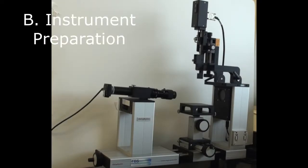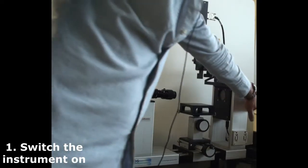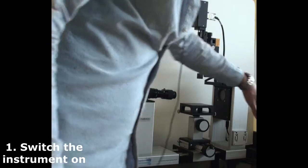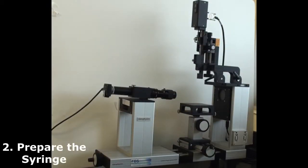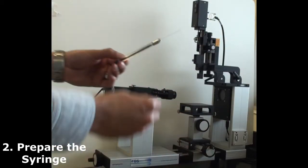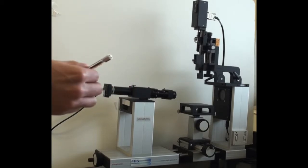To prepare the instrument, first turn on the instrument using the toggle switch on the back, then take your needle and fill it up with your probe liquid.